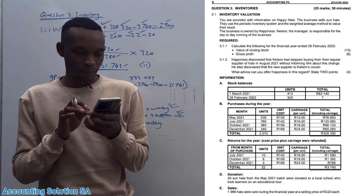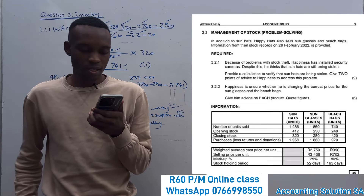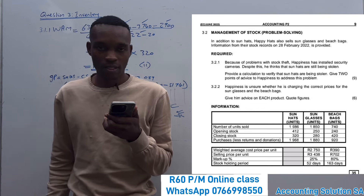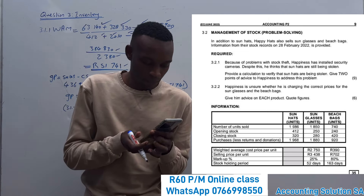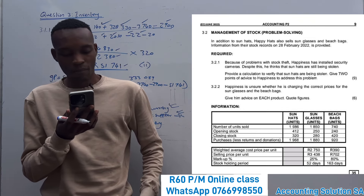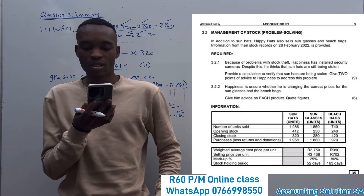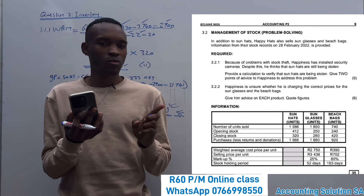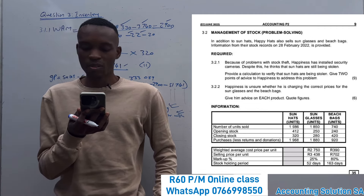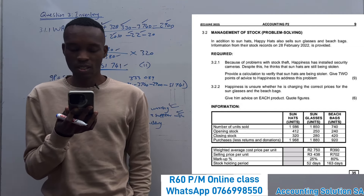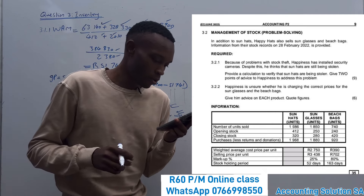For 3.2, management of stock and problem solving: in addition to sun hats, Happiness also sells sunglasses and beach bags. For 3.2.1: because of problems with stock theft, Happiness installed a security camera, but despite this he thinks sun hats are still being stolen. We need to provide a calculation to verify that sun hats are being stolen, and give two points of advice to address this problem.